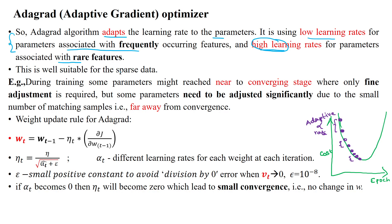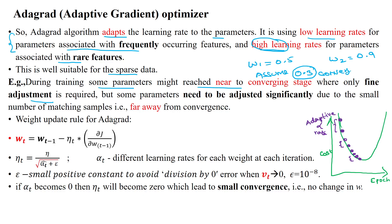Using different learning rates for different kinds of features is suitable for real-time datasets that have sparse data. During the training phase, some features might already be near the converging stage, needing only a small adjustment. For example, suppose we have two weights: w1 = 0.5 and w2 = 0.9, and the convergence point is at 0.3. We need to bring both weights toward 0.3.